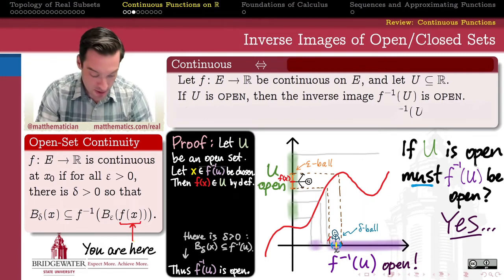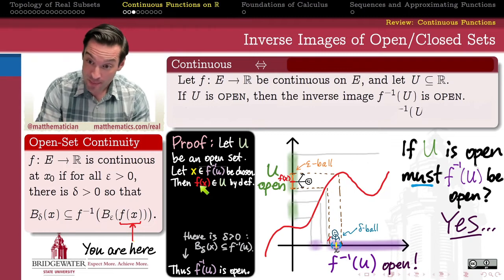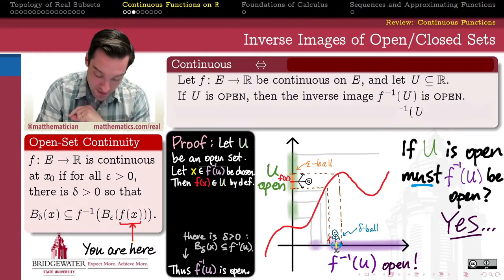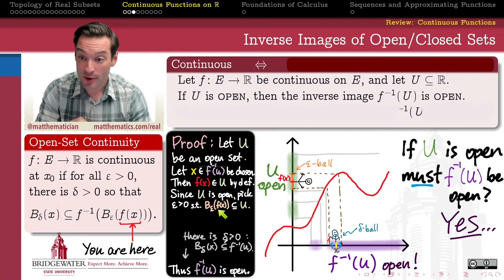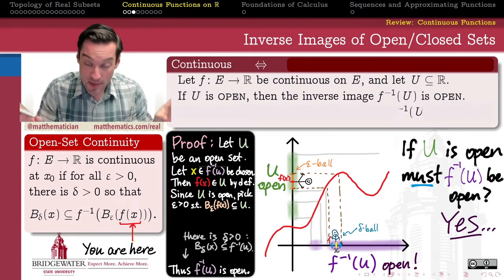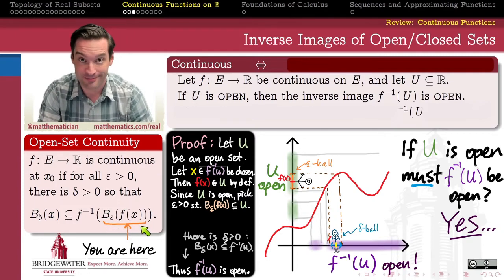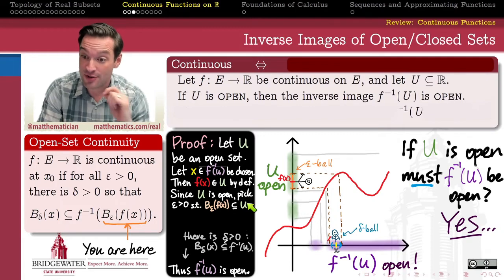To push further, I want to get an epsilon ball into the mix. I can do that by recognizing that f of x is a point of U, and we know U is an open set. By our definition of open, that means there exists an epsilon such that there is an epsilon ball — an epsilon neighborhood — around the point f of x that's entirely contained within U. In other words, if I stand at f of x and reach out my arms some epsilon distance, I can only touch members of U. Now I should look at the inverse image of that epsilon ball. Applying the inverse image under f to both sides of this containment, the inverse image of the epsilon ball around f of x is going to be a subset of the inverse image of U.